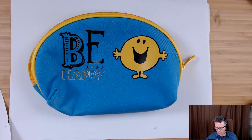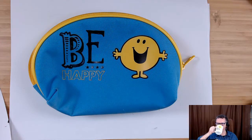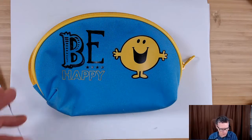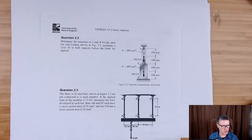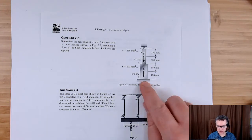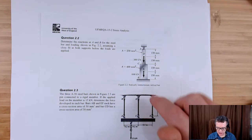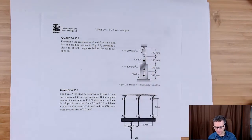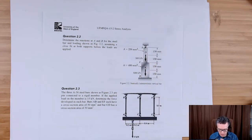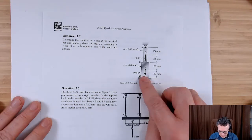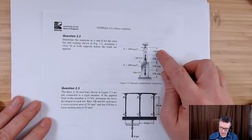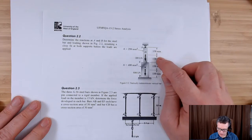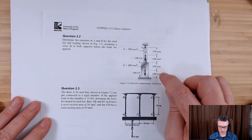Hello everyone. Let's have a look at question 2.2. This is an example of an indeterminate beam problem — we've got this point here hinged and this point here hinged, so I need an additional equation to solve it. This problem is basically just a pain because we've got one, two, three, four sections to work out.